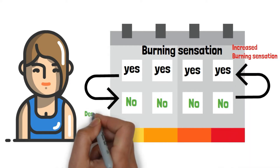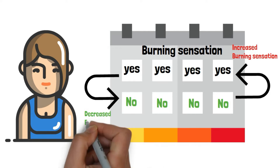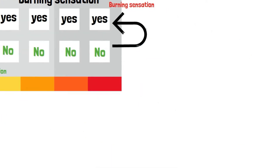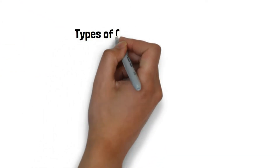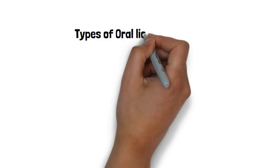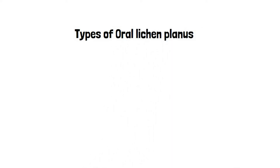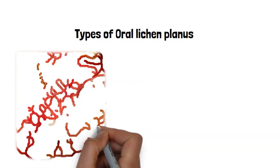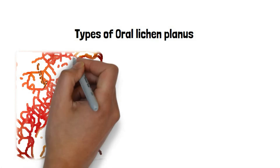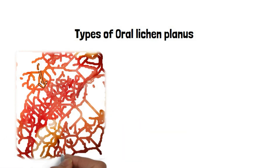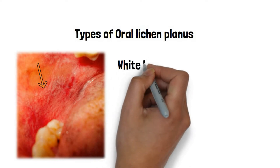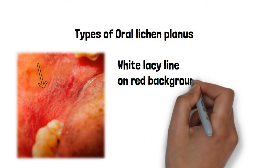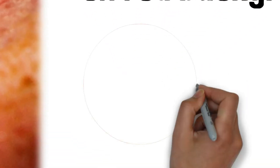Hence, people with oral lichen planus often complain only about episodic burning sensation of the oral cavity. There are many types of oral lichen planus, and their presentation varies in the oral cavity. In most cases, oral lichen planus presents as white lacy lines on a red background. These can be easily identified in the inner cheek regions. It also involves other parts of the oral cavity like the gums, palate, and tongue.